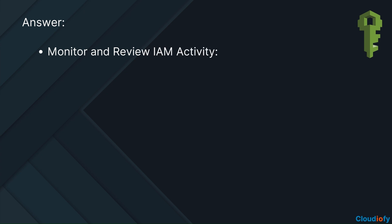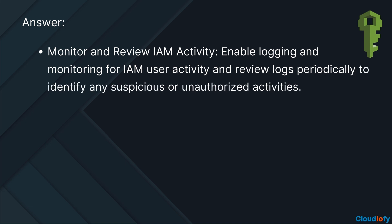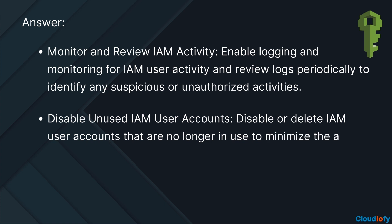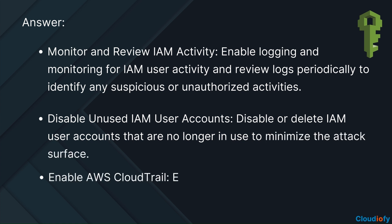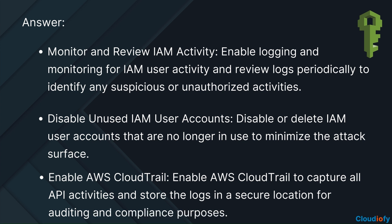Monitor and review IAM activity — enable logging and monitoring for IAM user activity and review logs periodically to identify any suspicious or unauthorized activities. Disable unused IAM user accounts — disable or delete IAM user accounts that are no longer in use to minimize the attack surface. Enable AWS CloudTrail — enable AWS CloudTrail to capture all API activities and store the logs in a secure location for auditing and compliance purposes.